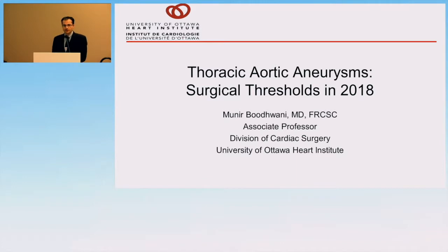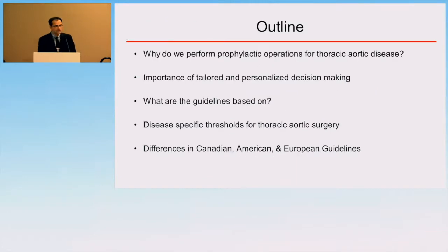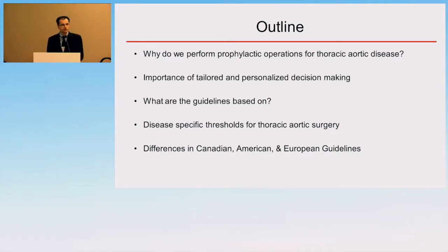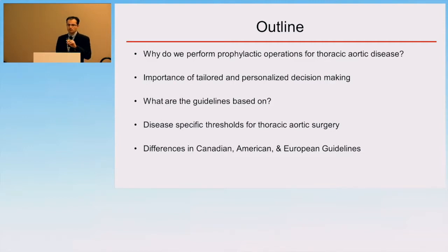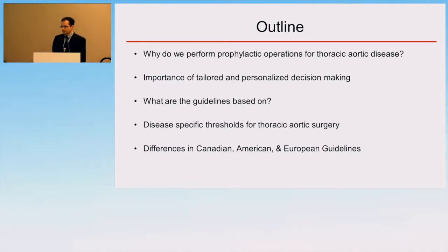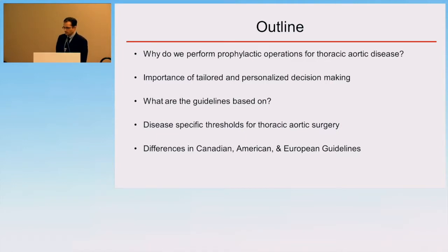I was asked to speak about thoracic aortic aneurysms and surgical thresholds in 2018. In the next few minutes, I'll try to go through a few important areas: to remind ourselves of the lens with which we've viewed this disease, why we perform prophylactic aortic operations, the importance of tailored and personalized decision-making, what data the guidelines are based on, and then dive into disease-specific thresholds for our various subsets of thoracic aortic disease. We'll do a quick scan of the Canadian, American, and European guidelines that have emerged over the last decade, and then summarize at the end.